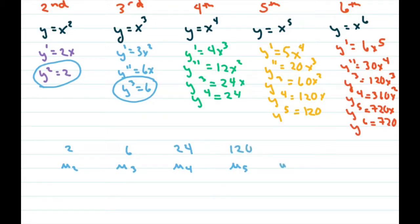u sub 5 is 120. u sub 6 is 720. Did I get them all? Yeah, 720. This is u sub 2, u sub 3, u sub 4, u sub 5. Alright, so let's see.